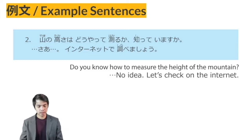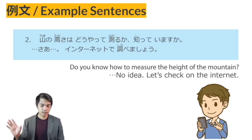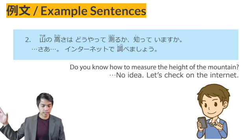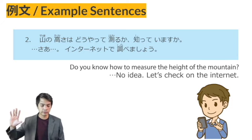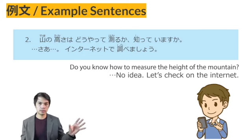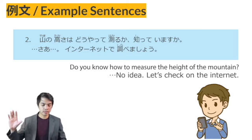Example sentence number 2: Yama no takasa wa dou yatte hakaru ka shitte imasu ka? The E-adjective TAKAI means 'tall' or 'high.' If you add SA to an E-adjective like TAKAI, it becomes TAKASA, meaning 'the height.' So yama no takasa — the height of the mountain. DOU YATTE — how? HAKARU means 'to measure.' DOU YATTE HAKARU KA SHITTE IMASU KA — do you know how to measure the height of the mountain?